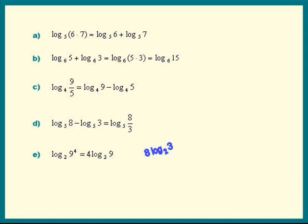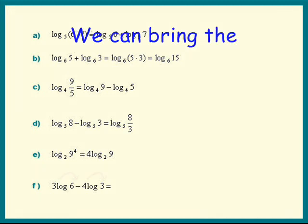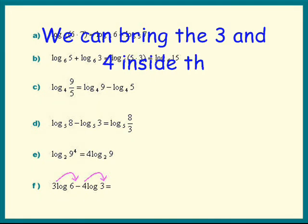This last example is a bit more challenging. Let's try to simplify this as much as possible. We see a minus sign between the logs, but we can't combine those into a fraction yet because of the 3 and the 4 in front of the logs. What can we do? Yes, Chipmunk? We can bring the 3 and the 4 inside the logs.